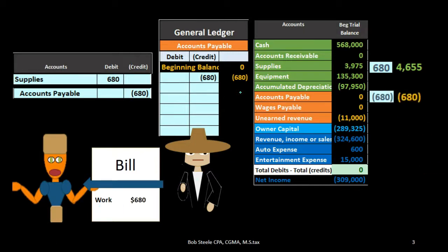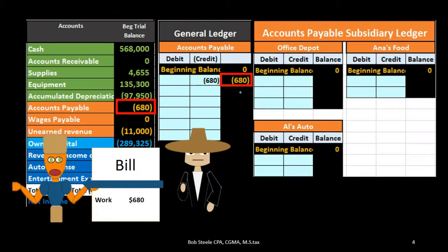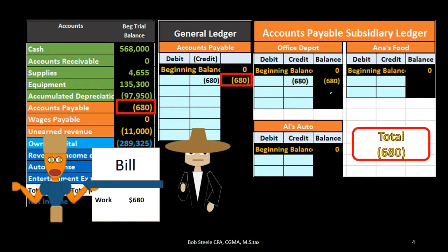That $680 is reflected on the trial balance, the balance sheet, and the general ledger. But we also want to track that information by vendor — who is it that we owe the $680 to? In this case, Office Depot. We increase the Office Depot subsidiary ledger account for accounts payable. If we add up all the subsidiary ledger accounts, we only owe Office Depot, which adds up to $680. The subsidiary ledger ties out to the general ledger, which ties out to the trial balance and the balance sheet. The subsidiary ledger is posting the same information as the general ledger, but organized by vendor.